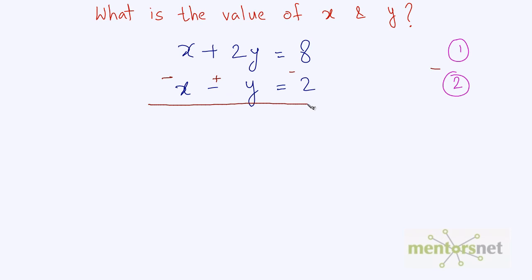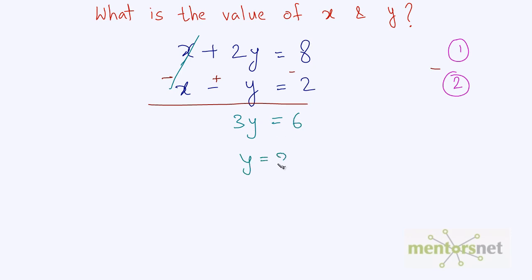So let's do that here. x minus x gets cancelled out — this is 0. 2y plus y gives you 3y, which is equal to 8 minus 2, which is 6. So y is equal to 2.